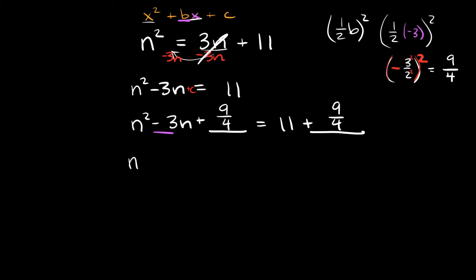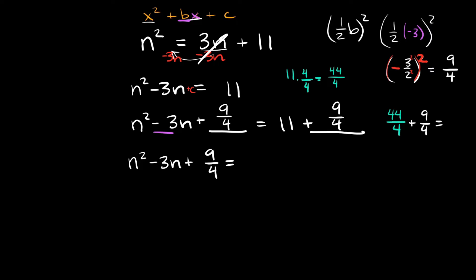Simplifying: n² - 3n + 9/4 = 11 + 9/4. To add these, convert 11 to a fraction with denominator 4: 11 = 44/4. So 44/4 + 9/4 = 53/4.